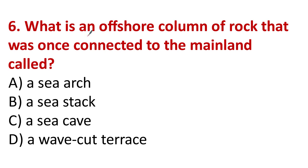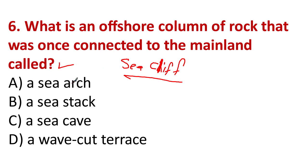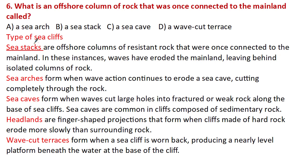Question 6: What is an offshore cliff or rock that was once connected to the mainland? To answer this, we need to know the kinds of sea cliffs. There are five types: sea stack, sea arch, sea cave, headland, and wave-cut terrace. You have to know their names and definitions. According to that, the answer will be C.